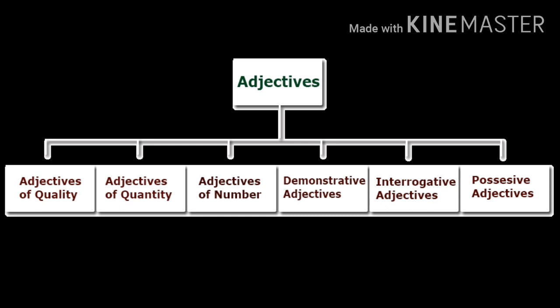Adjectives are of six types. Number 1: Adjectives of quality. Number 2: Adjective of quantity. Number 3: Adjective of number. Number 4: Demonstrative adjectives. Number 5: Interrogative adjectives. And number 6: Possessive adjectives.